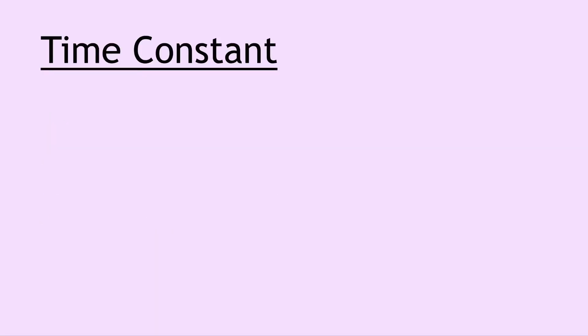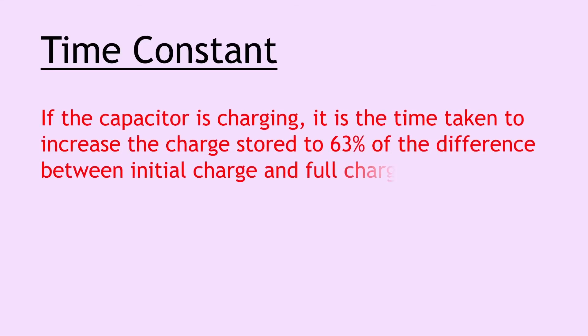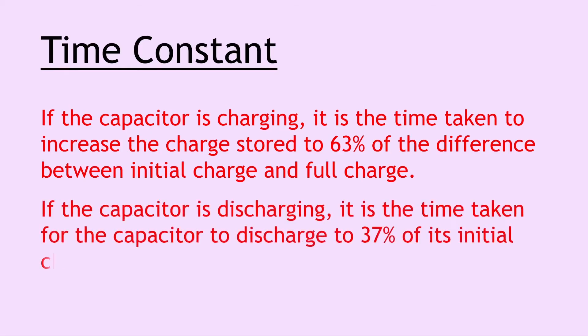Our next definition for the circuits part of the electromagnetism topic is the time constant. If the capacitor is charging, it is the time taken to increase the charge stored to 63% of the difference between initial charge and full charge. However, if the capacitor is discharging, it is the time taken for the capacitor to discharge to 37% of its initial charge.